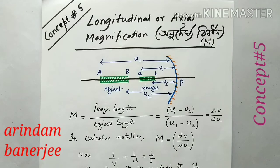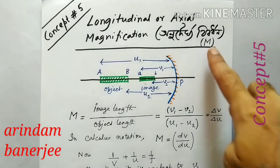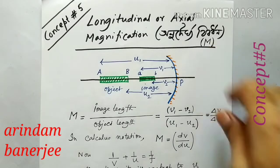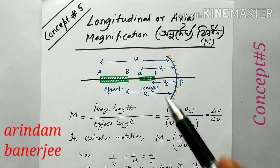In this video, we will discuss longitudinal or axial magnification, also called 'deergh vibordhan', denoted by capital M.